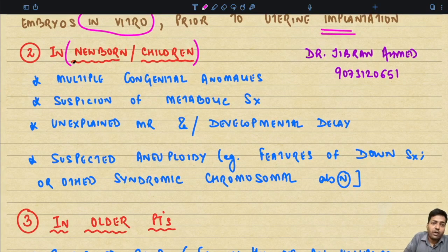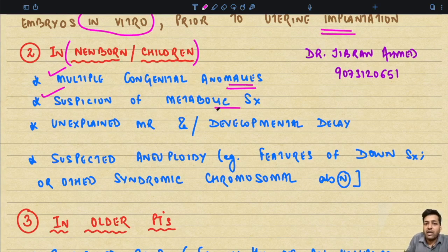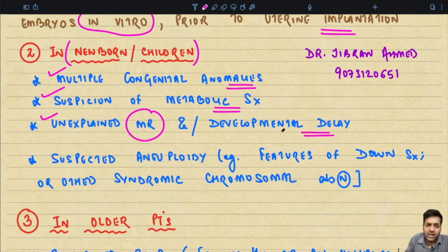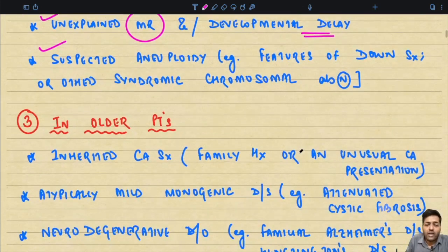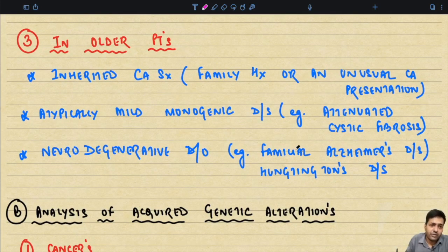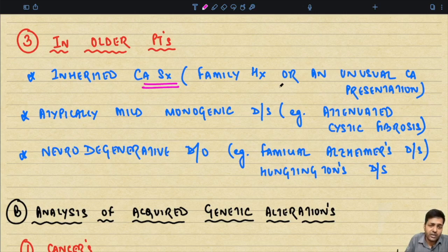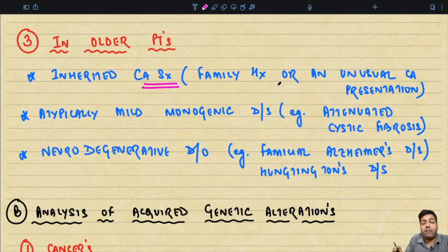Prenatal testing is done by amniocentesis, chorionic villus biopsy, or umbilical cord blood. Beyond prenatal testing, parents who are known to be at risk for having a child with a genetic disorder — for example, a parent already having a child affected by Down syndrome — can choose to have genetic testing performed on embryos in vitro prior to uterine implantation. Now, in case of newborns or children, indications include multiple genetic anomalies or suspicion of metabolic syndrome.